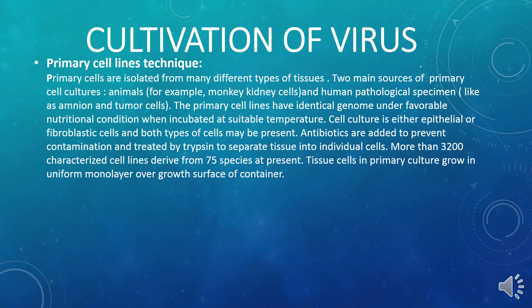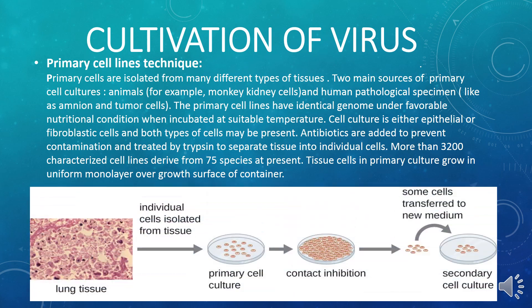Inside this cell culture, either epithelial or fibroblastic cells are present, or both types of cells can be found together. Additionally, antibiotics are added to prevent microbial contamination, and trypsin enzyme is also included, which keeps the individual cell line tissues separate and prevents them from merging, forming a uniform monolayer.